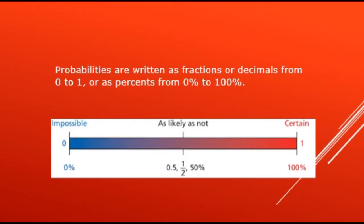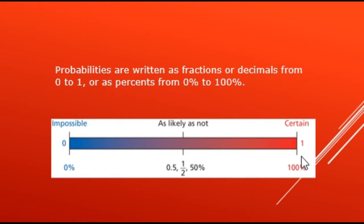Probabilities are written as fractions or decimals from 0 to 1, or as percents from 0% to 100%. Impossible means there is no chance that an event will happen. As likely as not means there is a 50% chance, and certain means there is a 100% chance that an event will happen.